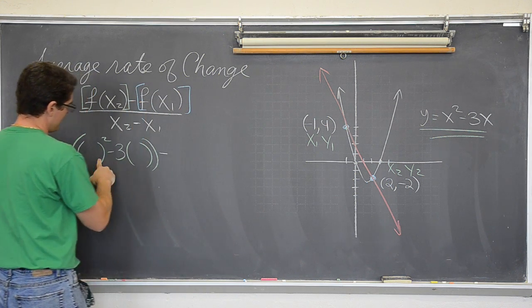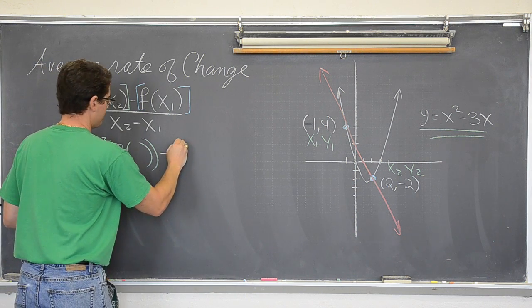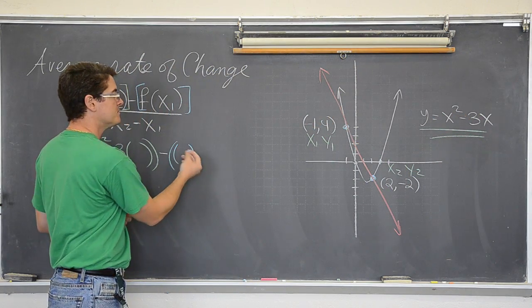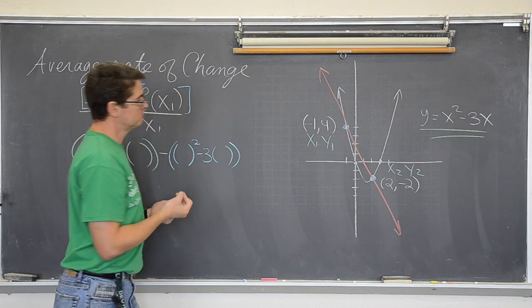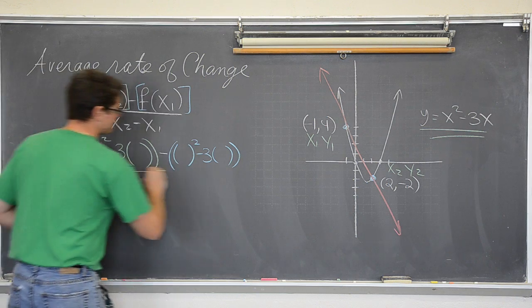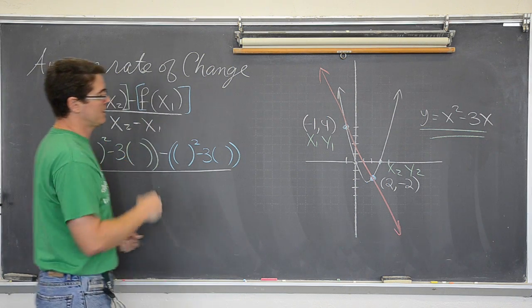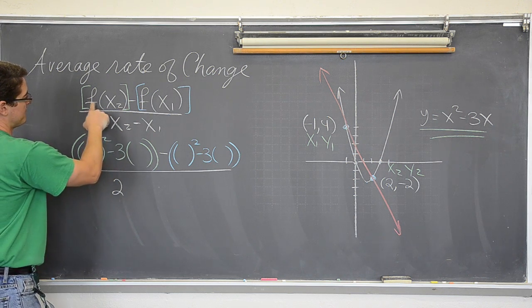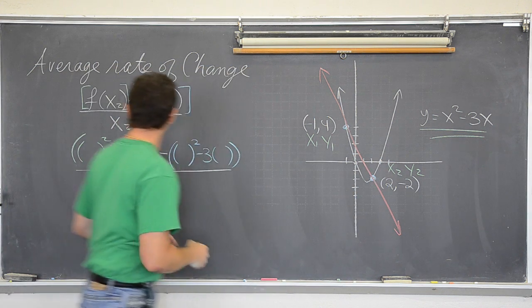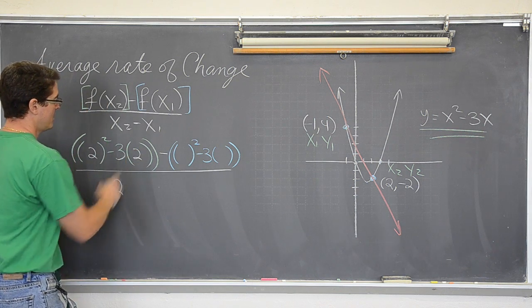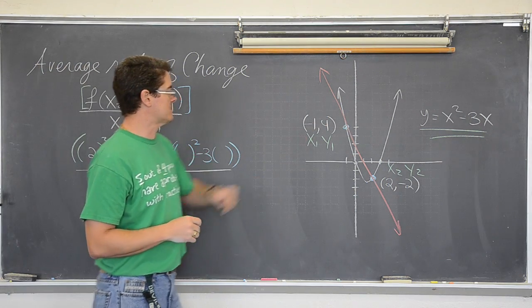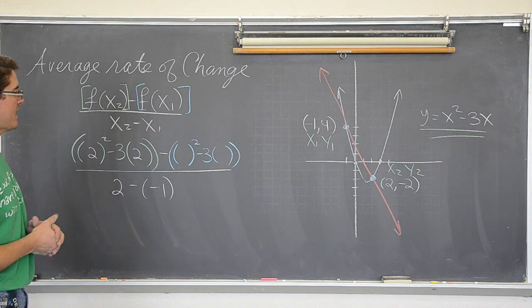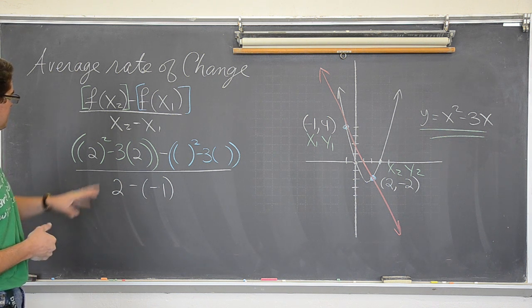Minus f of x sub 1. So I am going to highlight that in blue. This is going to be f of x sub 2 minus f of x sub 1. Again the function that I am working with is x squared minus 3x. So it is going to be something squared minus 3 times something. Close the parenthesis up over x sub 2 minus x sub 1. Well we labeled x sub 2 as the value of 2, and x sub 1 is labeled as negative 1.